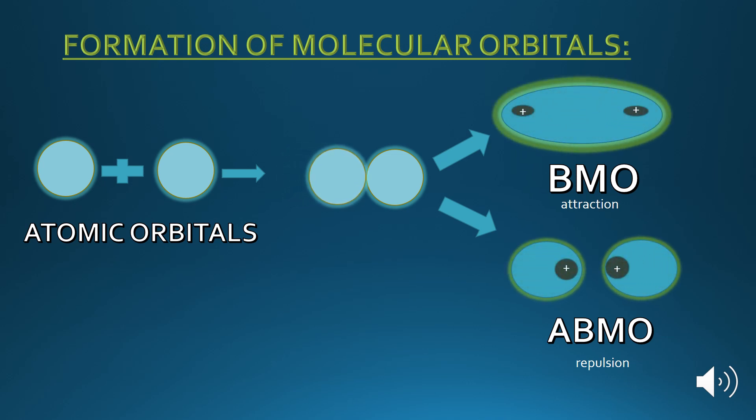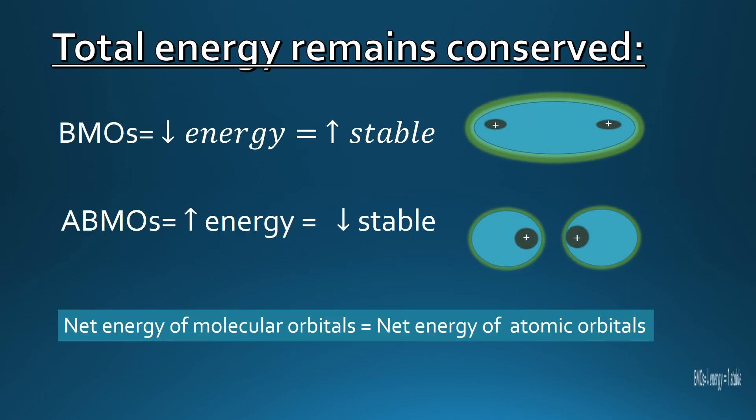Let's discuss the formation of molecular orbitals. When two atomic orbitals combine, as you can see in the diagram, two molecular orbitals are formed. One is the bonding molecular orbital, denoted by sigma, and the other is the anti-bonding molecular orbital, denoted by sigma star. Remember that there is attraction at bonding molecular orbitals and repulsion at anti-bonding molecular orbitals, and the total energy of the atomic orbitals is always equal to the total energy of the molecular orbitals.